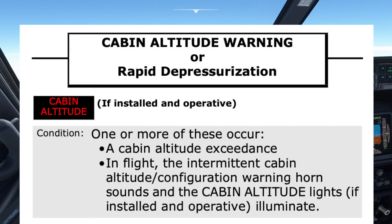As with all non-normal checklists, the pilots must agree the correct checklist is about to be used. The title and condition are read by the pilot monitoring, and the pilot flying must agree before it is continued. This would sound like: "Cabin altitude warning or rapid depressurization checklist — condition: one or more of these occur — a cabin altitude exceedance in flight, the intermittent cabin altitude warning horn sounds, and the cabin altitude lights, if installed and operative, illuminate. Do you agree?" "I agree."